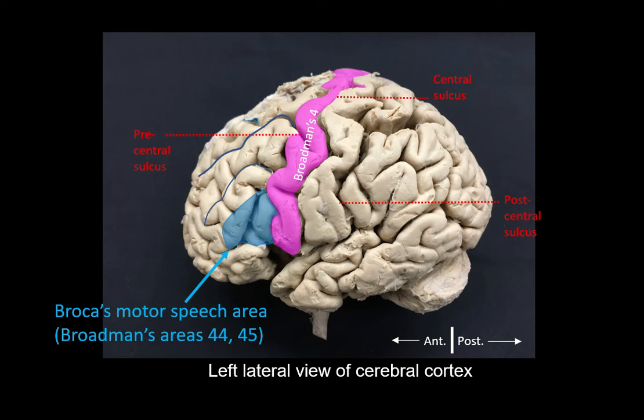However, in some instances, the Broca's area may be situated in the right hemisphere as the dominant hemisphere, which is less common. Usually it is the left hemisphere which is dominant. But if the right hemisphere is the dominant one, then motor speech could be affected by any lesion in the right hemisphere. Usually, it is the left hemisphere which has the Broca's motor speech area in it.